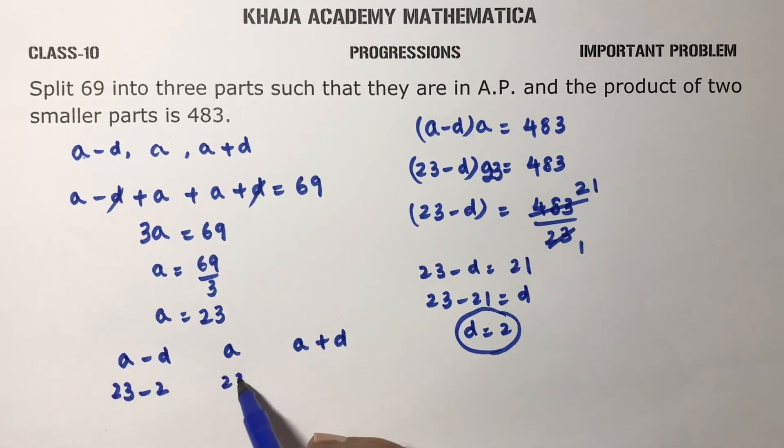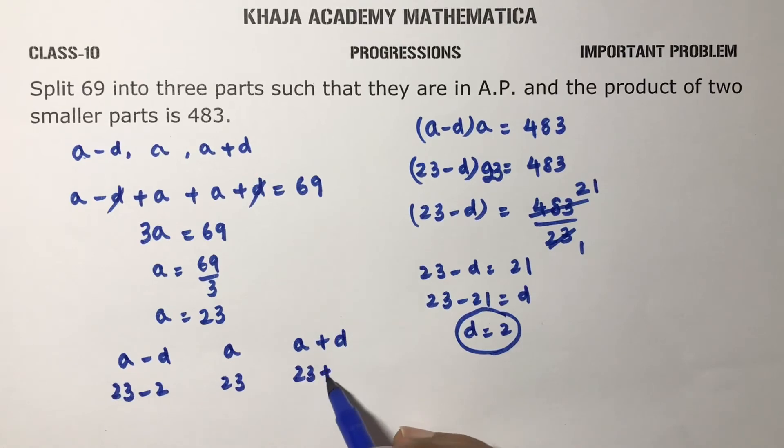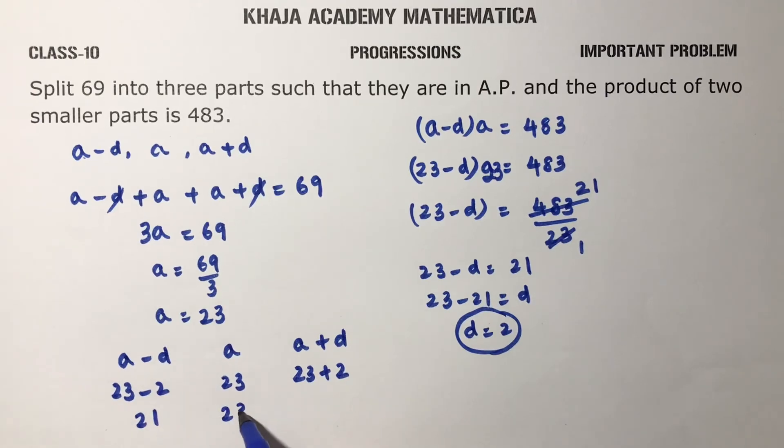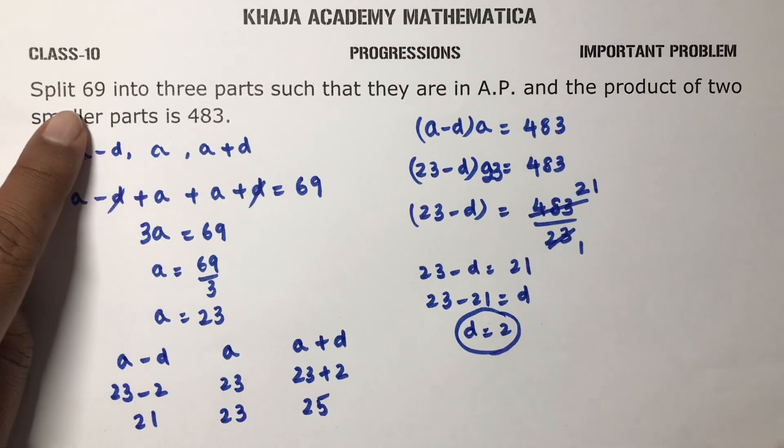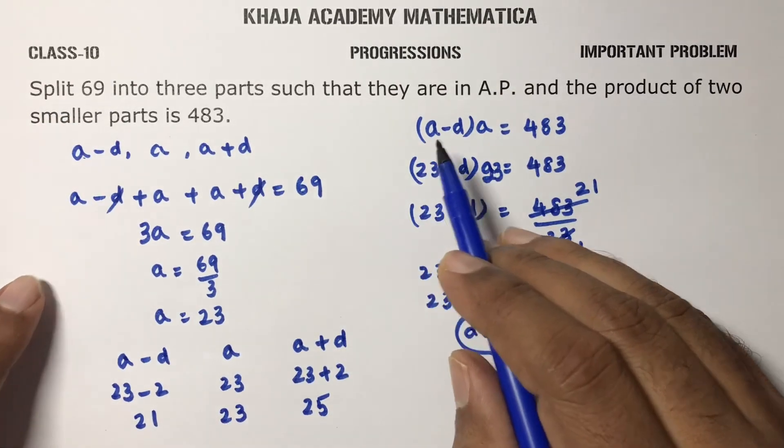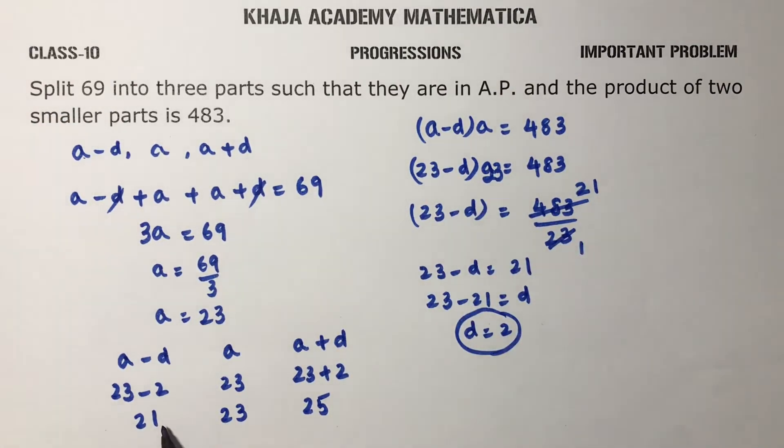A is 23, 23 minus 2, 23, 23 plus 2. So 23 minus 2 is 21, 23, 25. So split 69 into three parts, the three parts are 21, 23, and 25.